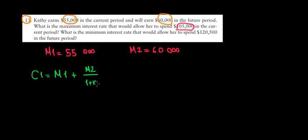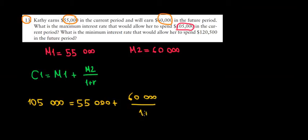And the rest is just math. We know that the consumption that we want to achieve is $105,000. $105,000 equals to the money in the present, which is $55,000, plus the money in the future, which is $60,000 divided by one plus the interest rate.